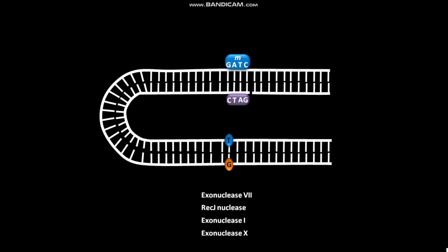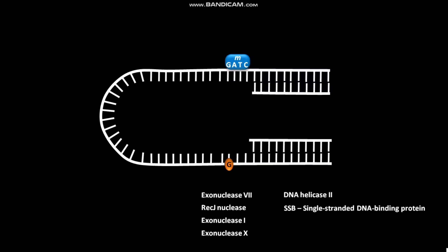One out of four different exonucleases like exonuclease VII, RecJ nuclease, exonuclease I, or exonuclease X then digests or removes the non-methylated strand from the cleavage site to just beyond the mismatch site. This digestion of non-methylated strand also requires the action of DNA helicase II and SSB. This digestion leaves a gap in the newly made strand.